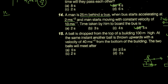A ball is dropped from the top of a building 100 m high. At the same instant another ball is thrown upward with a velocity of 40 m/s from the bottom of the building. The two balls will meet after how long? ایک ball اوپر سے گرائی گئی ہے، ایک ball نیچے سے 40 m/s سے پھینکی گئی ہے، ان کے بیچ gap 100 m ہے۔ Relative motion کرتے ہیں: ball A کی initial velocity 0، acceleration g (downward)؛ ball B کی initial velocity 40 m/s، acceleration g (downward)۔